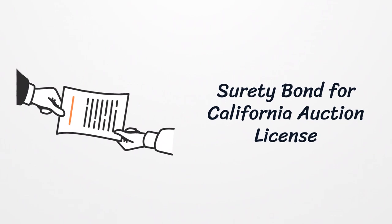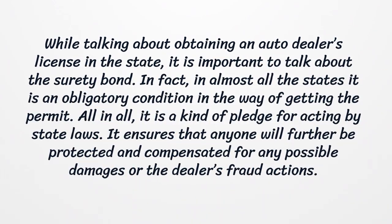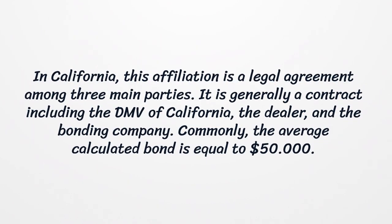Surety Bond for California Auction License. While talking about obtaining an auto dealer's license in the state, it is important to talk about the surety bond. In fact, in almost all states it is an obligatory condition in the way of getting the permit. It is a kind of pledge for acting by state laws, ensuring that anyone will be protected and compensated for any possible damages or the dealer's fraud actions. In California, this affiliation is a legal agreement among three main parties — generally a contract including the DMV of California, the dealer, and the bonding company. The average calculated bond is equal to $50,000.